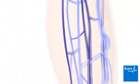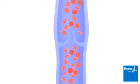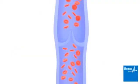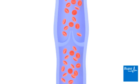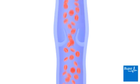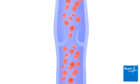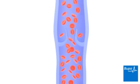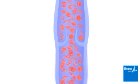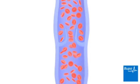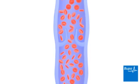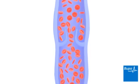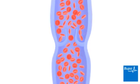Varicose veins are thought to develop when the valves don't close properly. Here we show a valve in a superficial leg vein. If the valves don't work properly, the blood is able to flow backwards. Blood pools in the vein, causing the vein to stretch. This is called a varicose vein.